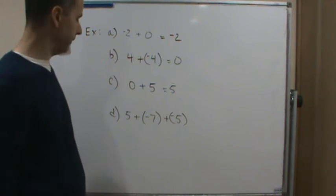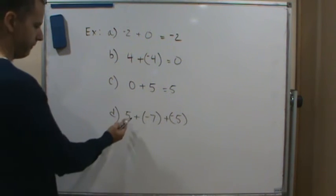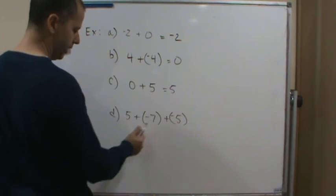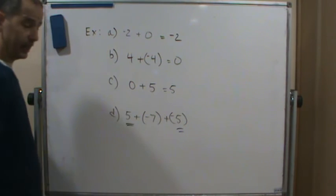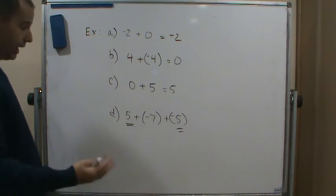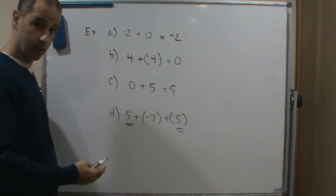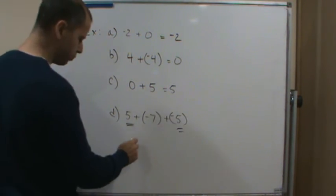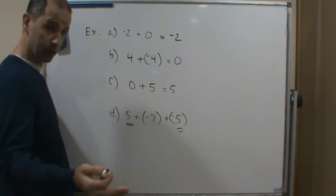So again, different ways to look at it. Now this one here, if you notice, you've got 5 + (-7) + (-5). So you notice that you've got 5 and -5. Well, because addition is commutative, you can switch things around. So why don't we just rewrite these and put the two additive inverses together, because we know those are going to go to 0.